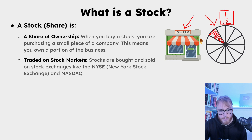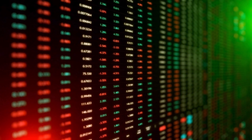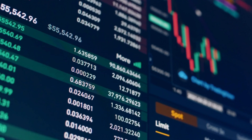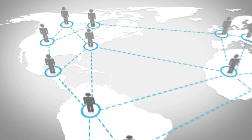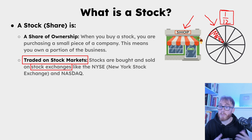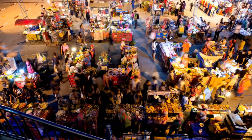Stocks are traded on stock markets — they are bought and sold every second, with millions of transactions happening all over the world. Where are they bought and sold? The transactions happen on what we call stock exchanges. Some examples are the NYSE, which stands for New York Stock Exchange, and NASDAQ. You can basically think about these as marketplaces for stocks.